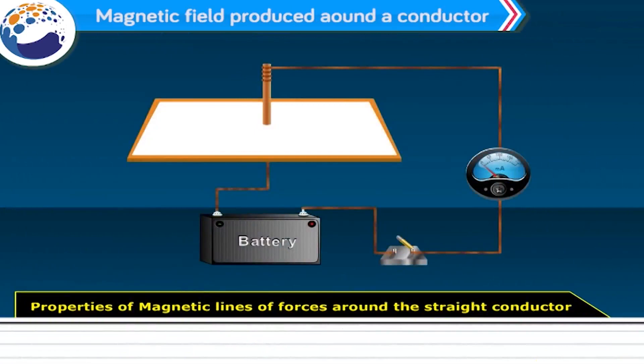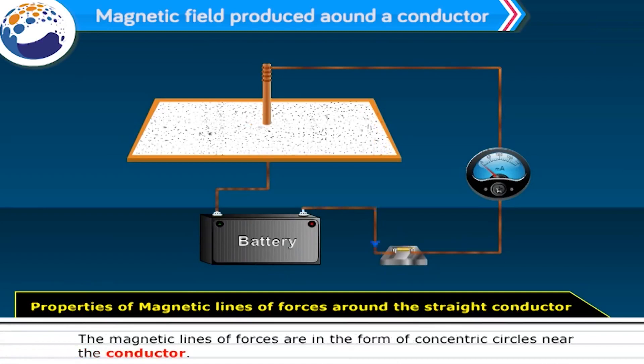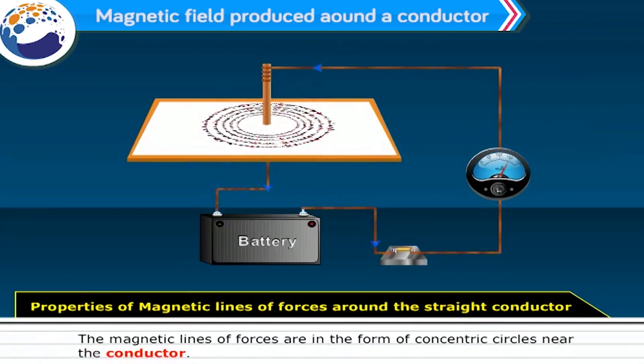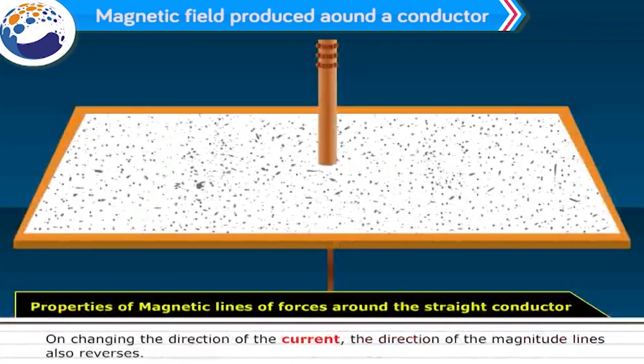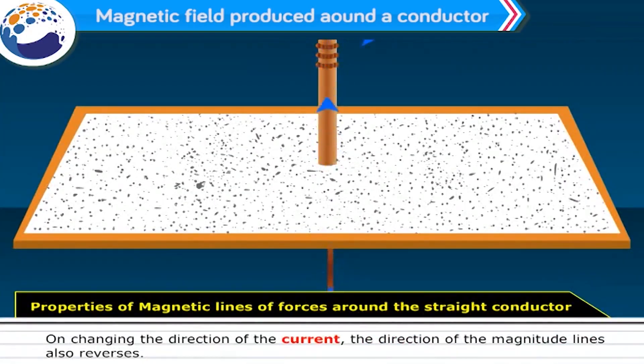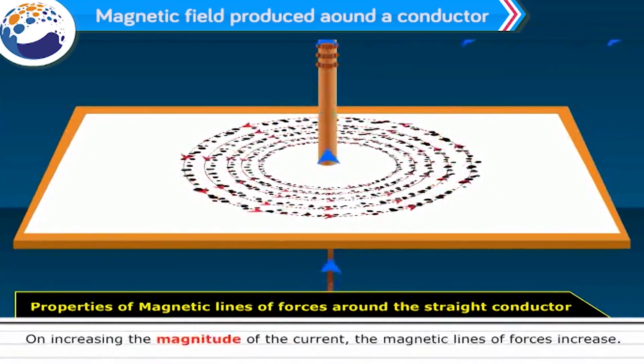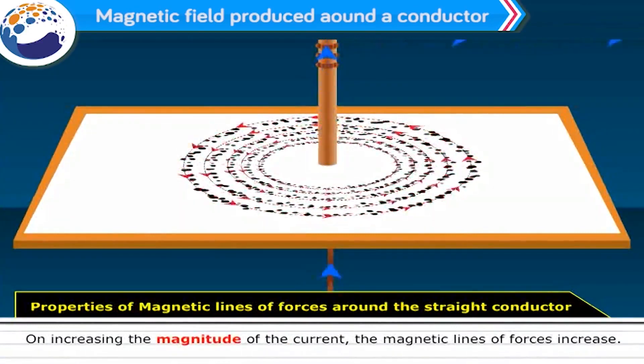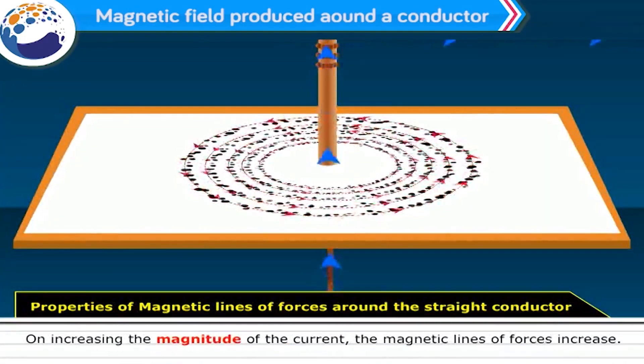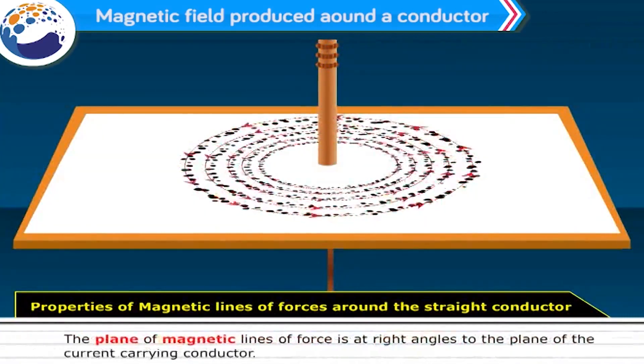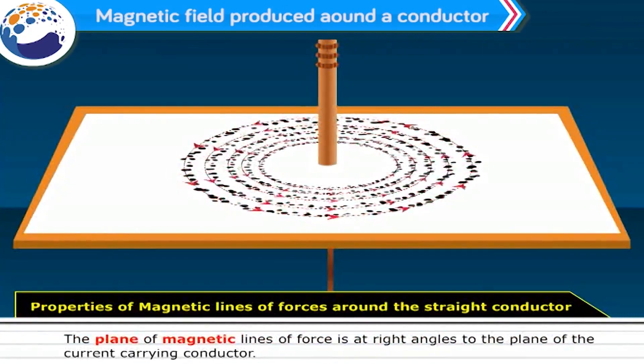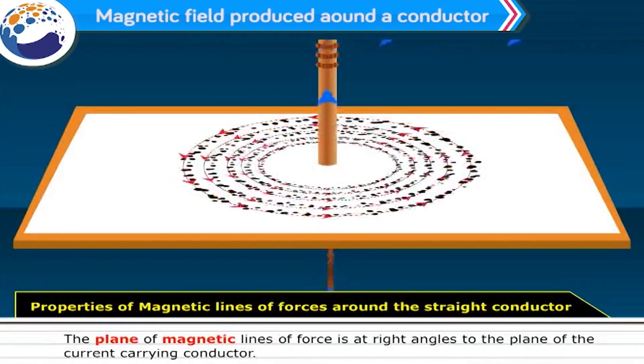Properties of magnetic lines of forces around the straight conductor. Number 1: The magnetic lines of forces are in the form of concentric circles near the conductor. Number 2: On changing the direction of the current, the direction of the magnetic lines also reverses. Number 3: On increasing the magnitude of the current, the magnetic lines of forces increase. Number 4: The plane of magnetic lines of force is at right angle to the plane of the current-carrying conductor.